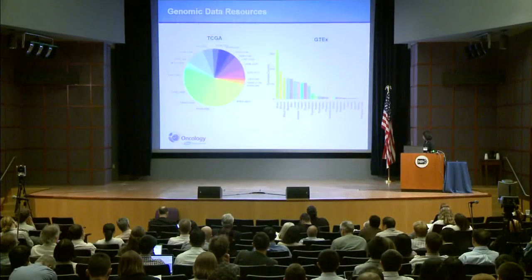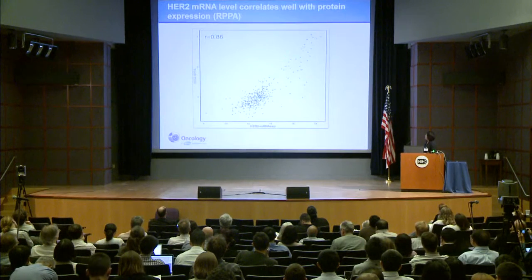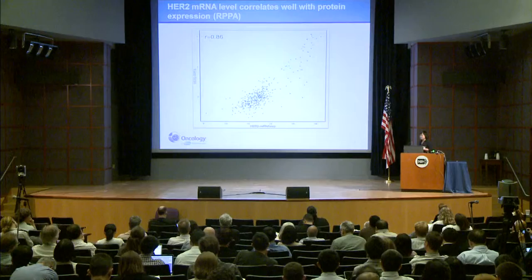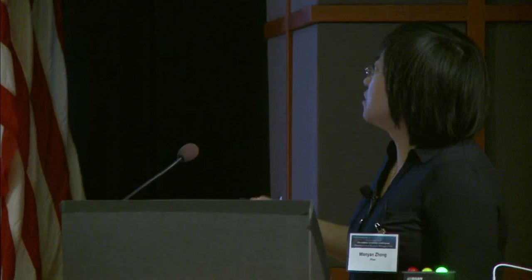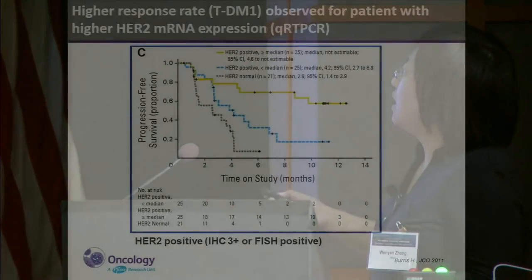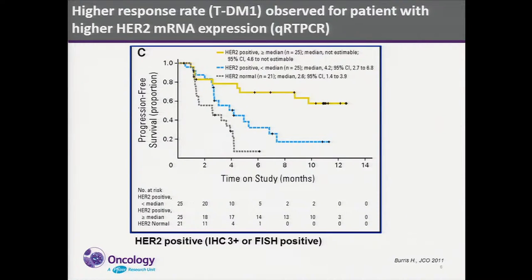Although we know that the correlation of messenger RNA and protein expression levels is not perfect, in some cases they have shown very good correlation. Here is an example: between HER2 messenger RNA expression level and HER2 protein level using TCGA data, we see a very good correlation. In addition, in a recent clinical trial, a higher response rate to TDM1 — which targets HER2 — was observed for patients with high messenger RNA expression levels by qPCR. So this gives us hope that we can potentially use messenger RNA expression level as an approximation.